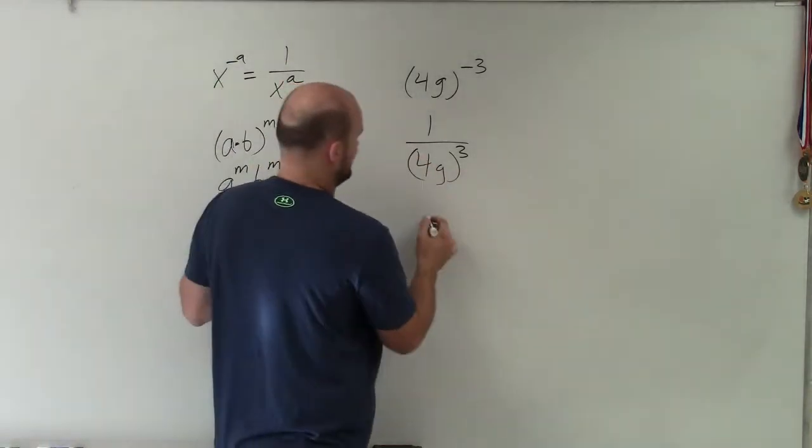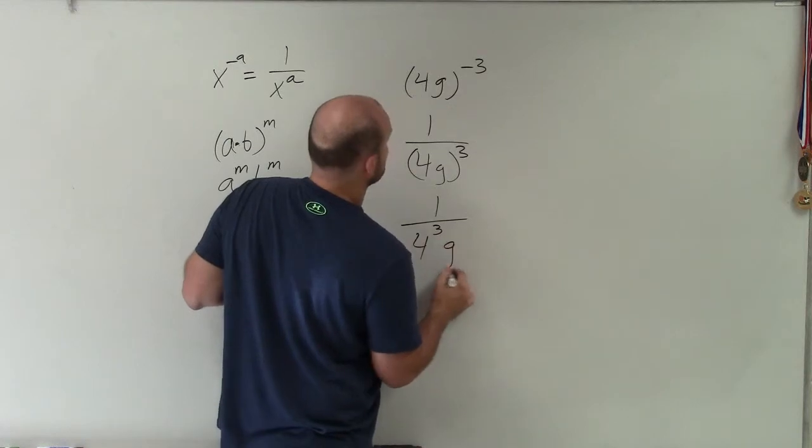So therefore, I can rewrite this as 1 over 4 cubed times g cubed.